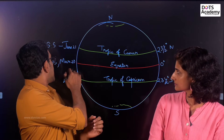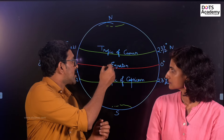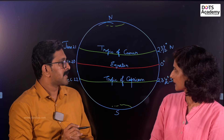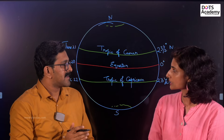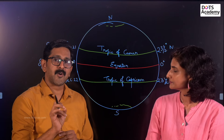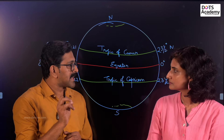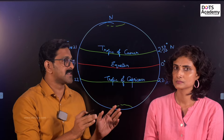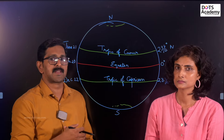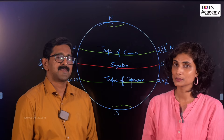March and September 23rd — it's called Equinox — equal day and equal night. The day of equal night and equal day is that date. Equinox is called Zero Shadow Day.